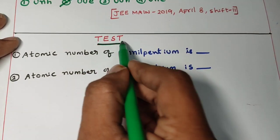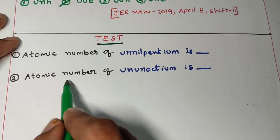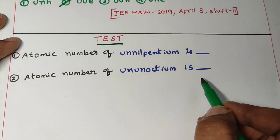Now try this test. Atomic number of unnilpentium and atomic number of ununoctium. Try this question and write your answer in the comment box.